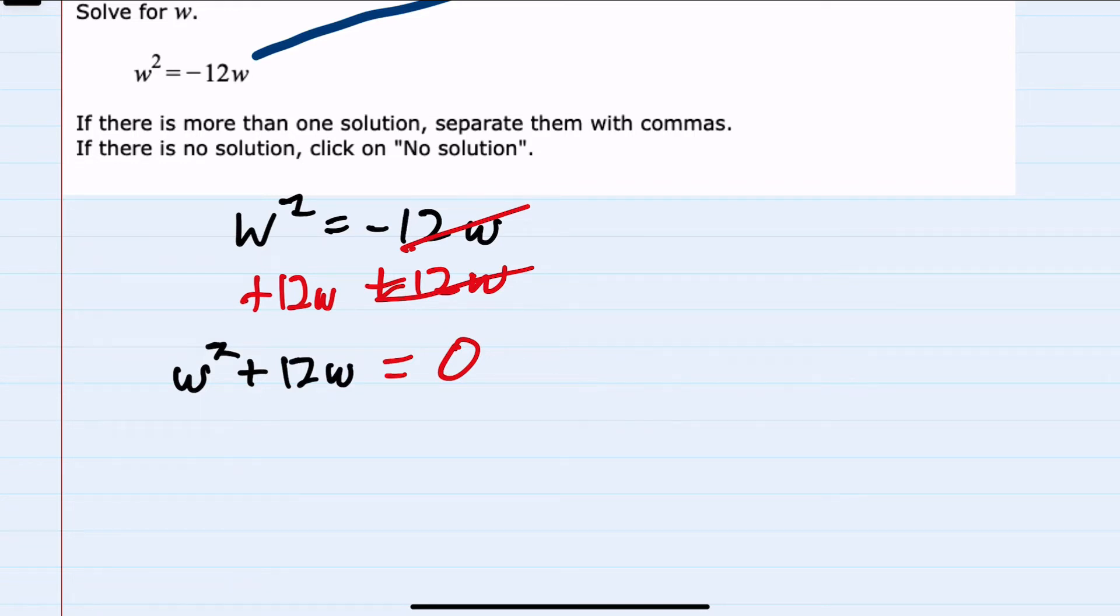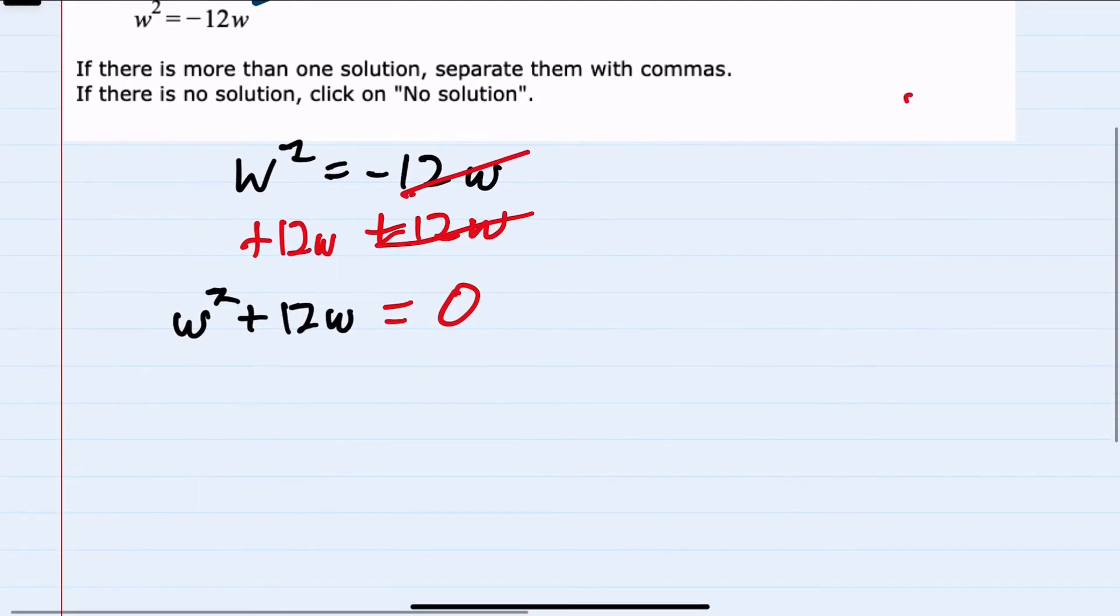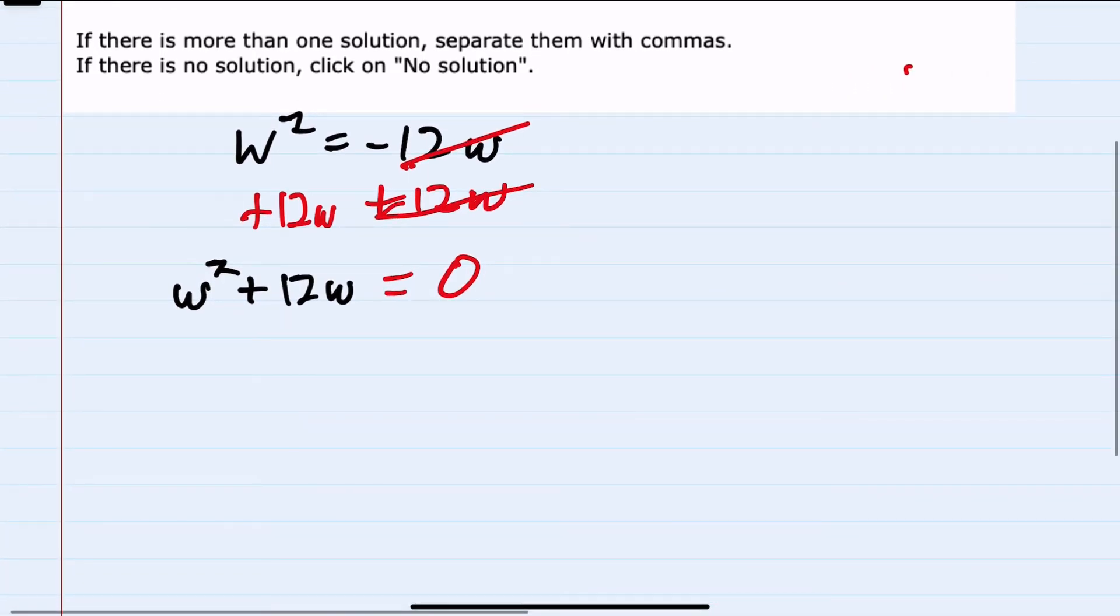To solve in this form, I would first factor out any common factors on the left-hand side. And here they both have a w, so I can factor out a w. From the first term, I would be left with the other w. That was the w squared. I've taken out a w. And the 12w, if I've removed the w, is now just 12, equals zero.